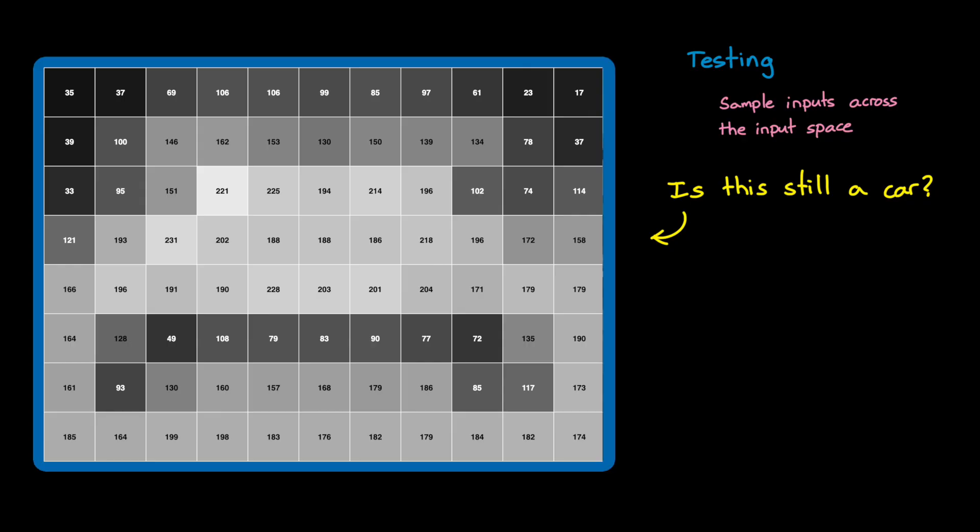With testing, the only way to know is to test all of the variations. And since there are effectively infinite variations, that's impossible. Even after hundreds of thousands of tests, you still have no guarantees for untested inputs.